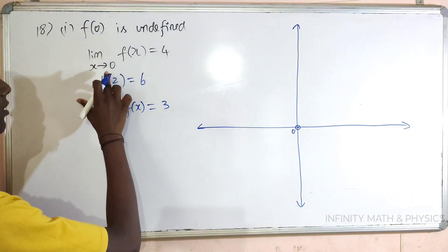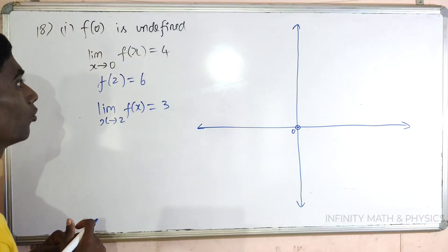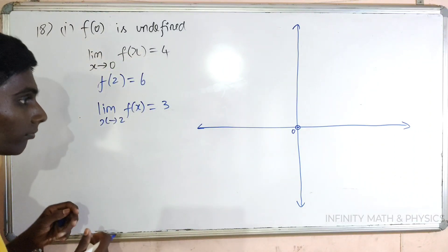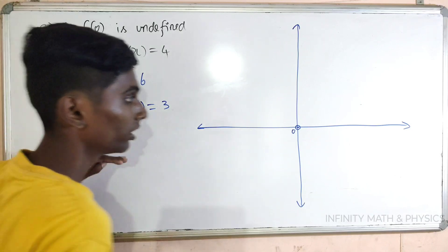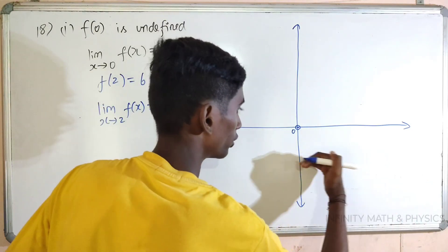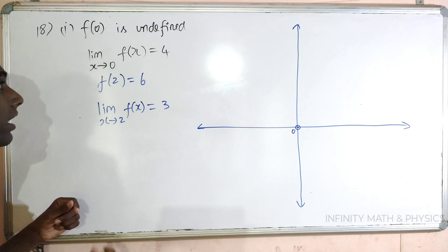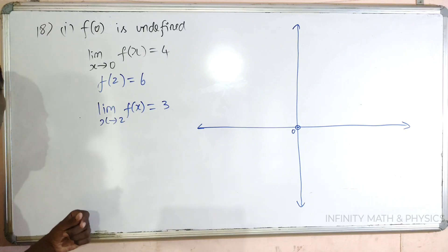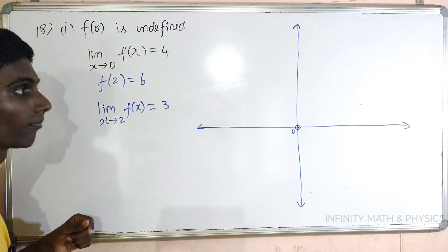Limit x tends to 0, f of x is equal to 4. So limit x tends to 0 — the left side is 0, right side is 0. If you look at the function, then 4 is the value.